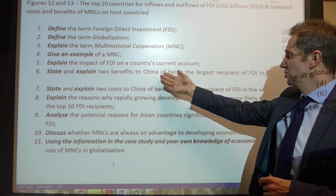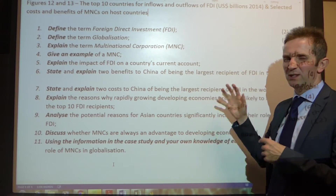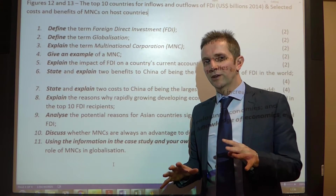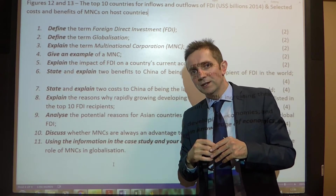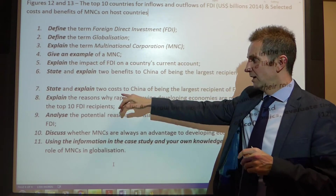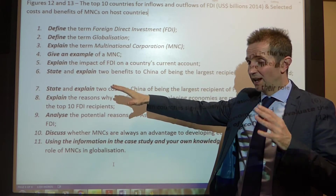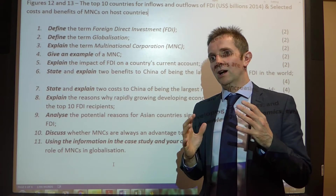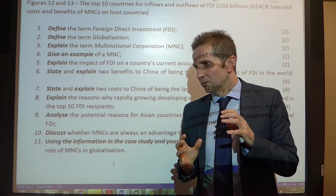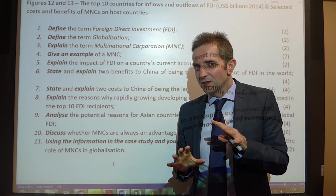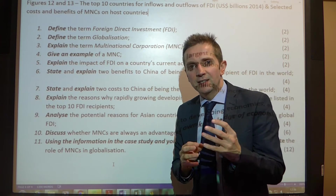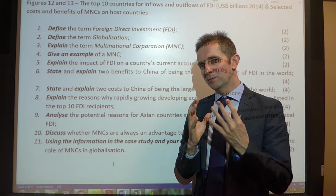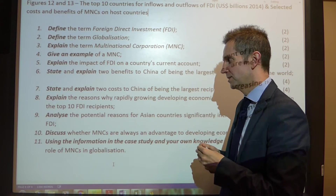State and explain two benefits to China of being the largest recipient of FDI — that's almost written for you in Figure 13, because it identifies a whole list of advantages of FDI. State and explain two costs — again, Figure 13 does this for you almost. Figure 13 has so much detail that if you can put it all together in lovely comprehensive prose, you should do really well in this essay.